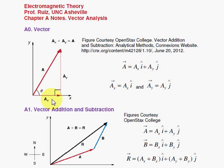Each of those have length 1, and they point east for the i-hat and j-hat points north. So you can think of this vector as a sum of two vectors, A sub x times i-hat, this vector here along the horizontal.